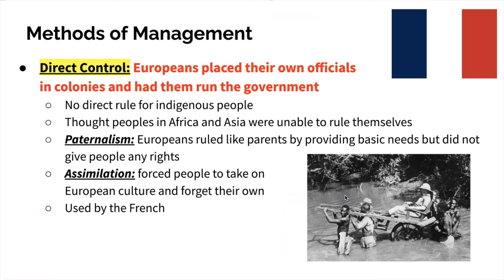This looks different depending on which type of European power we're talking about. Direct control was commonplace, especially amongst French colonies. This is where European officials would be placed in the colonies and they would be the ones that ran the government. Someone from France would move to the colony and run the government directly, meaning that indigenous people did not get to make decisions about what was going on and did not get to rule themselves. This occurred not only in Africa but also in Asia.